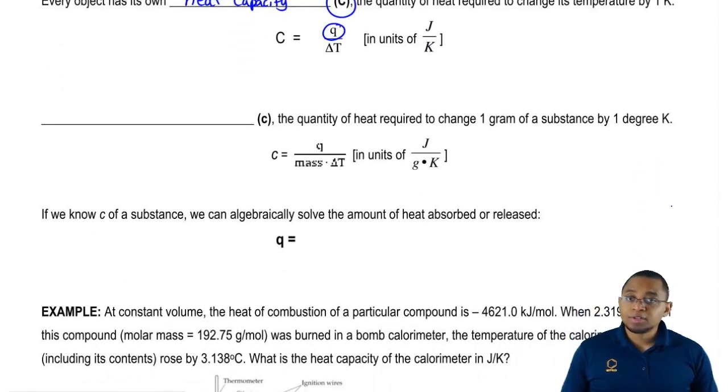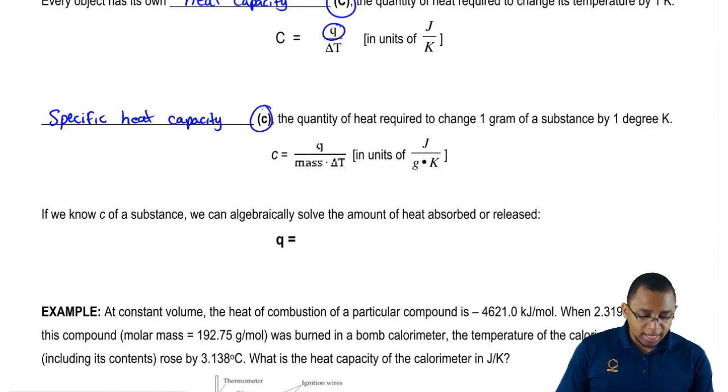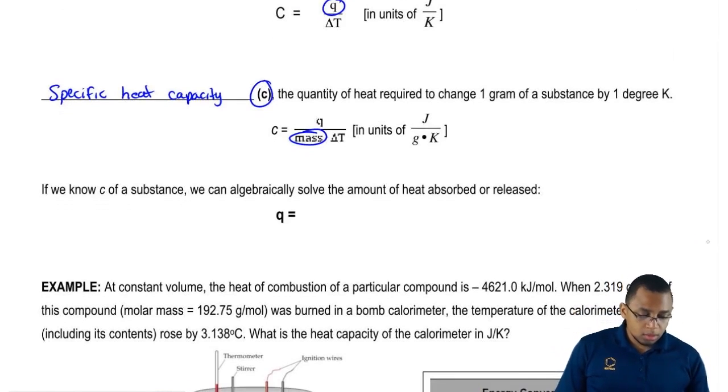Similar to heat capacity, there's another property. This property is known as specific heat capacity. Notice that this one is lowercase c, and this is the amount of heat that's required to change one gram of a substance by one Kelvin. Here, we're just going to introduce the concept of mass. Mass here will be in grams. It's similar to heat capacity but more in depth where it talks about mass.